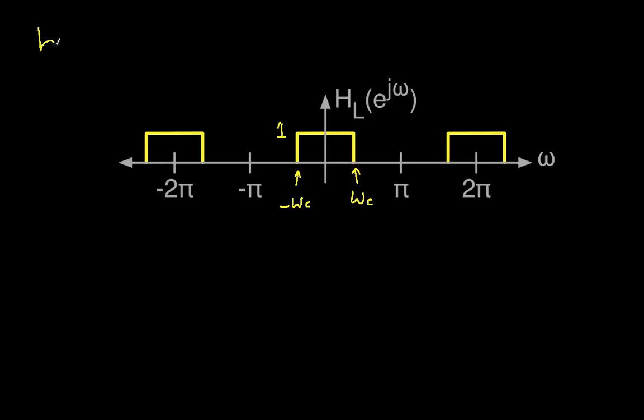What we'd like to do then is find HL of n, that is the impulse response of this ideal low-pass filter, and we'll find HL of n by actually just taking the inverse discrete time Fourier transform.